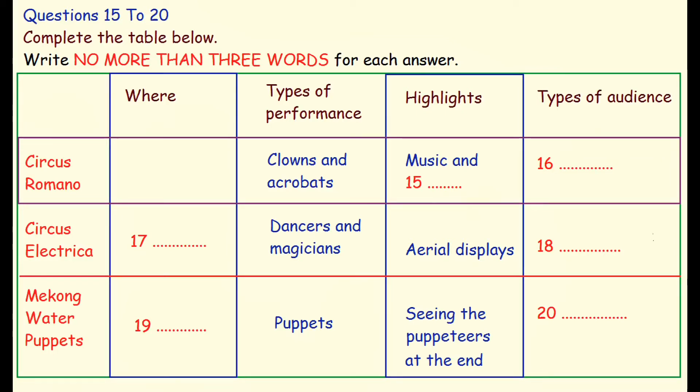With only six performers, it's a small production, which suits the venue well. The studio only seats about 200 people. For my money, it's the aerial displays which are outstanding, as well as the magical tricks, features which are missing from Circus Romano. An interesting feature of the show is that the performers are so young. The youngest is only 14, but it's still well worth seeing. A good one for the whole family.